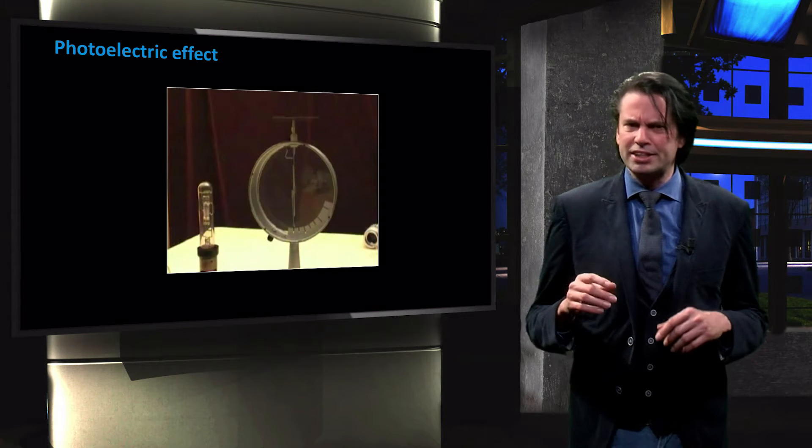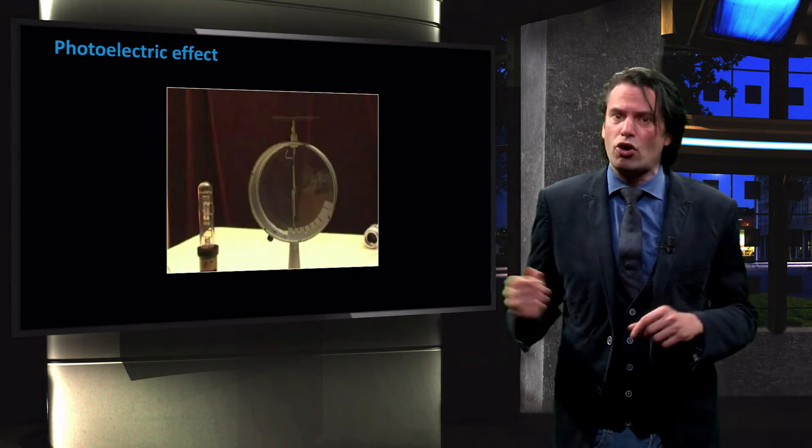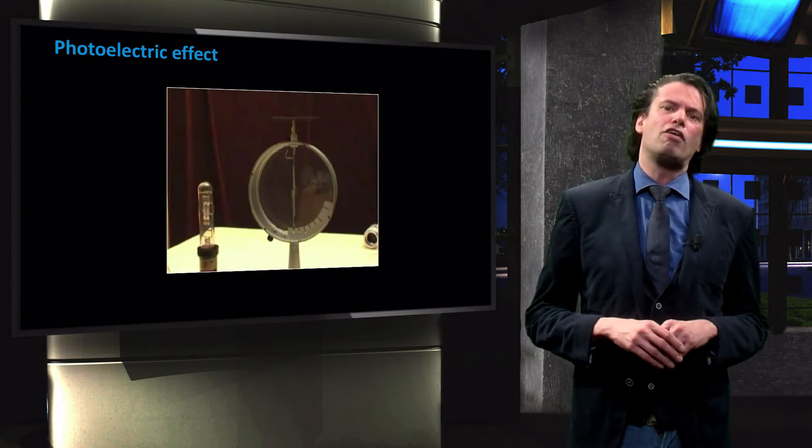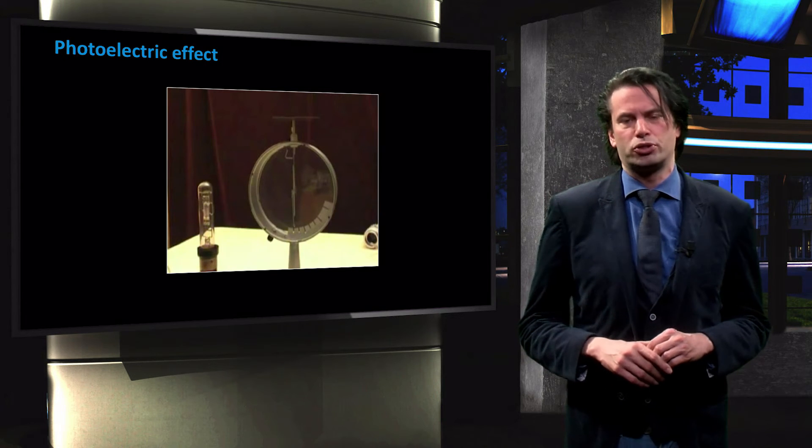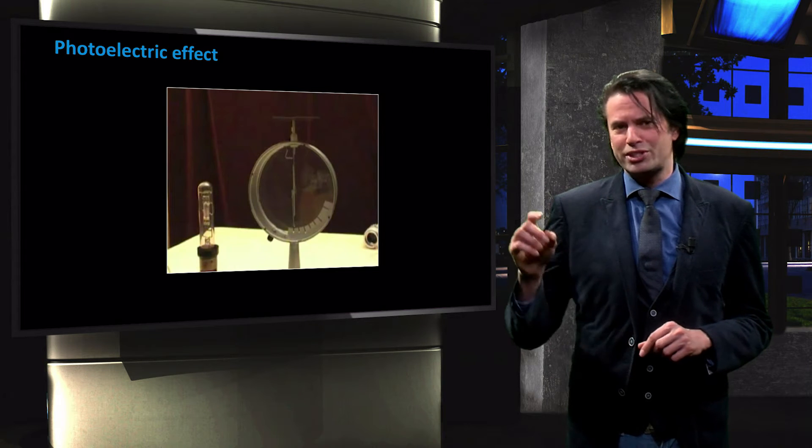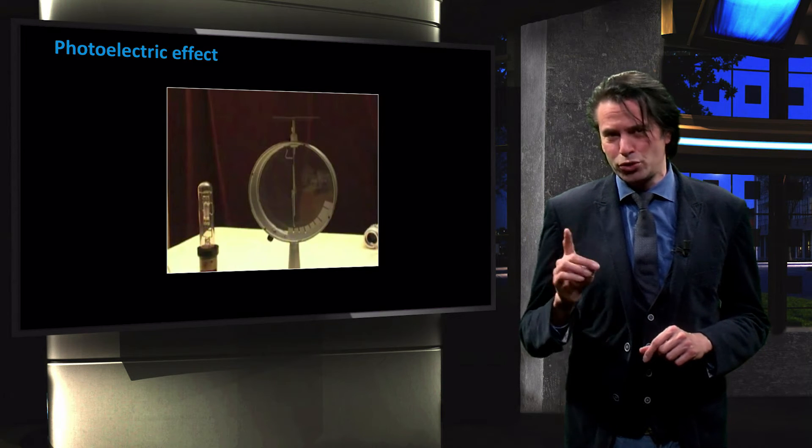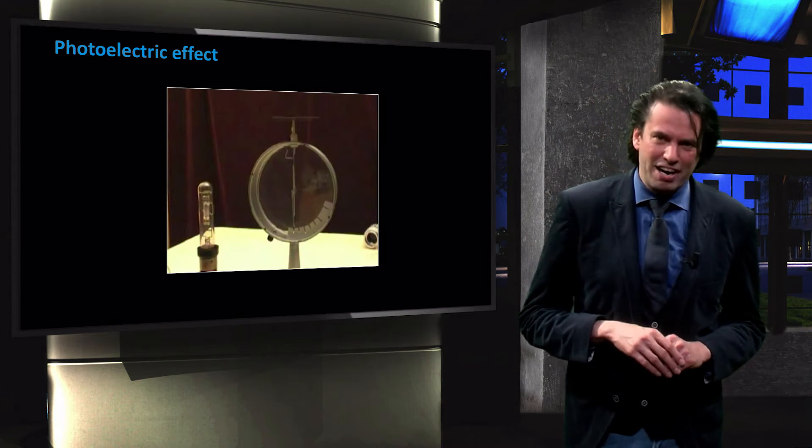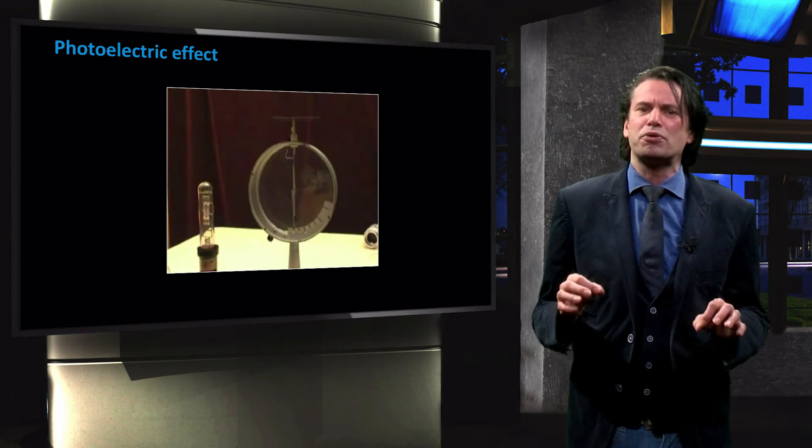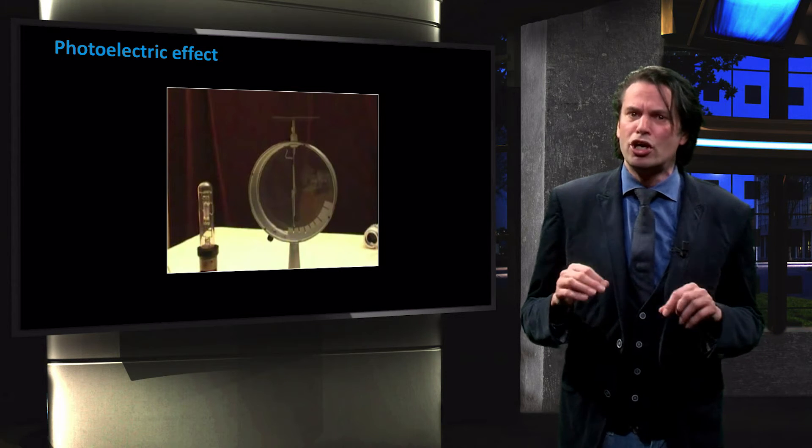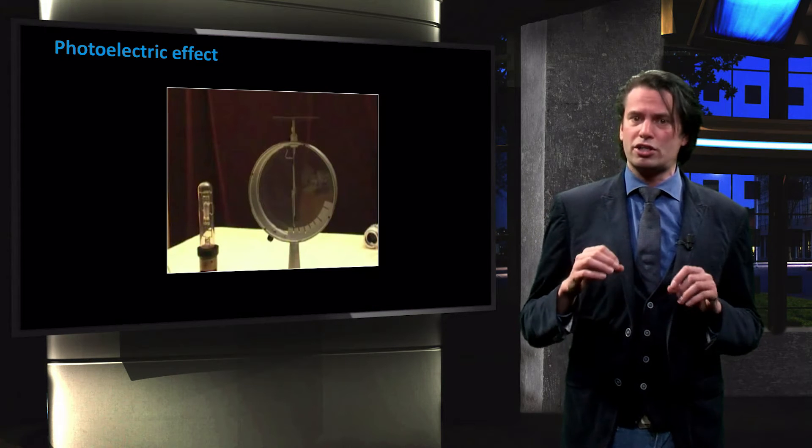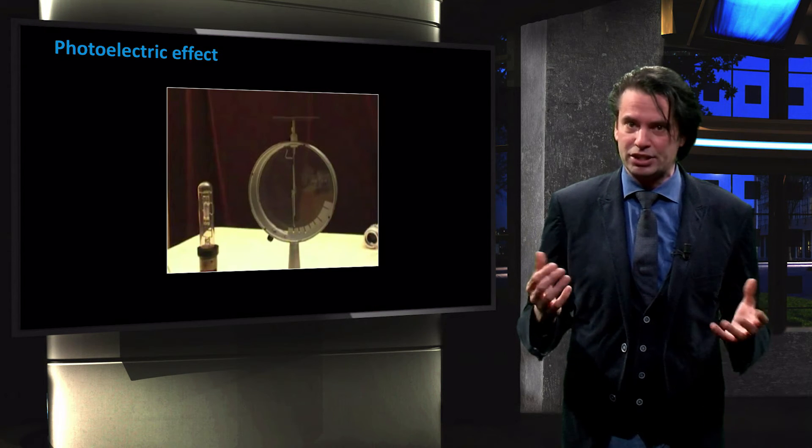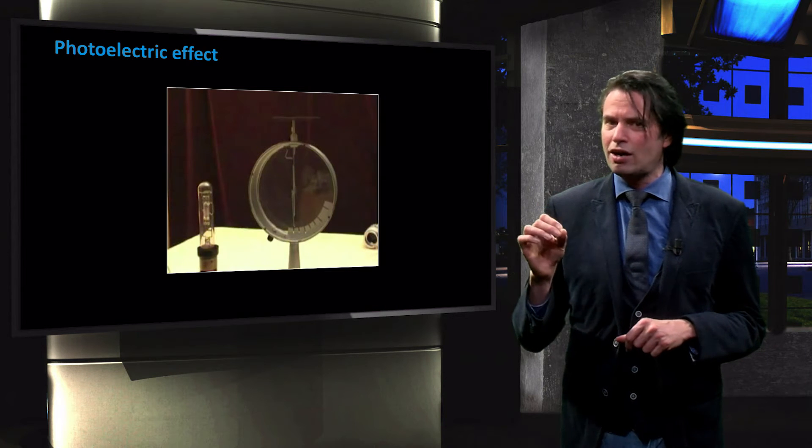Moreover, the electron ejection occurs regardless of the light intensity or duration of the time exposure. It was Einstein who understood in 1905 that Planck's law actually has to be interpreted such that light comes in quanta, or countable amount of energy. We call these quanta photons.